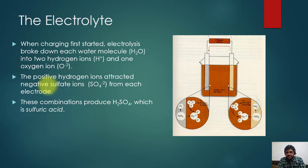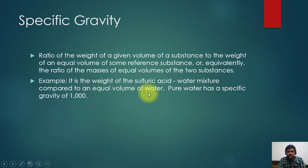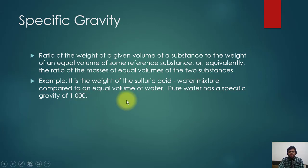Specific gravity is the ratio of the weight of a given volume of a substance to the weight of an equal volume of a reference substance — equivalently, the ratio of the masses of equal volumes of two substances. For example, it compares the weight of a sulfuric acid-water mixture to the equal volume of pure water. Pure water has a specific gravity of one. So if we say the specific gravity of the electrolyte is 1.2 or 1.3, it means it is 20% or 30% heavier than the same volume of water.